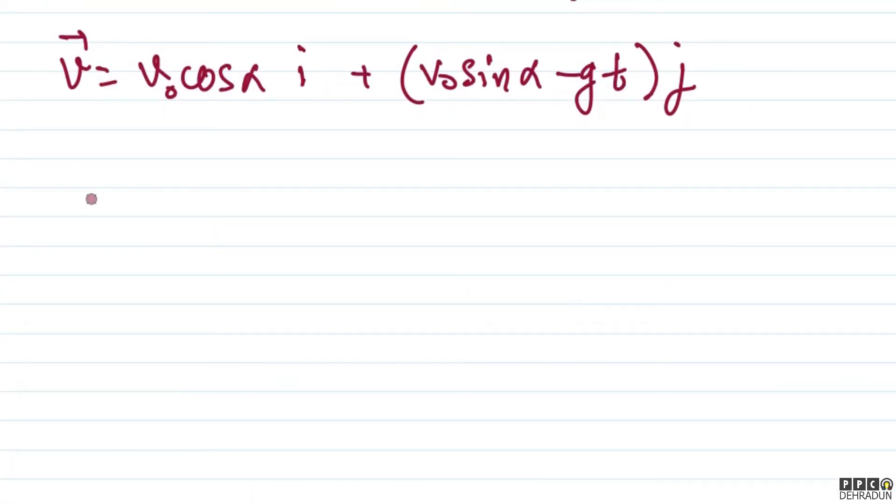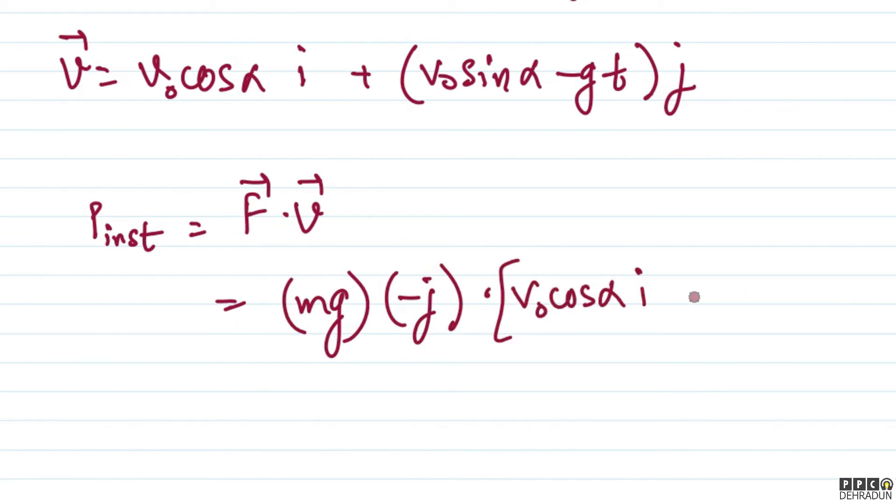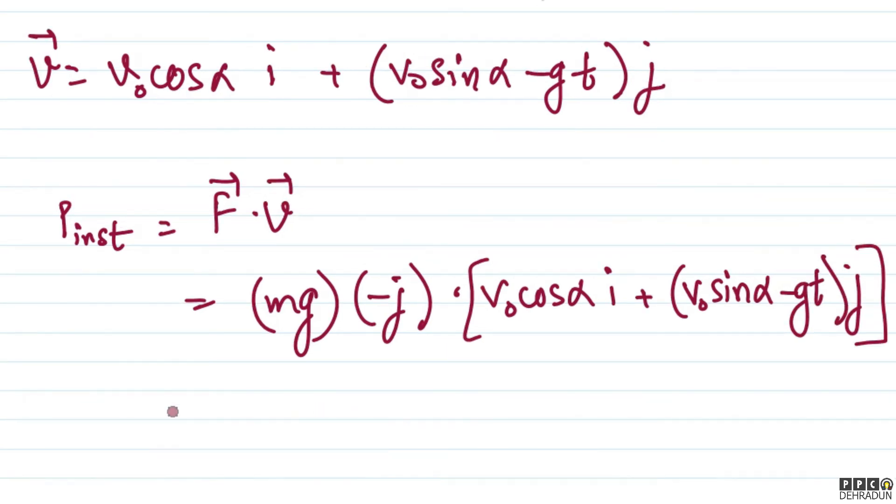Now let's find the instantaneous power. We can write instantaneous power equals f vector dot v vector. The force vector is mg times minus j-cap. Taking the dot product with v-naught cos alpha i-cap plus v-naught sin alpha minus gt j-cap. If we take the dot product, this becomes minus mg multiplied by v-naught sin alpha minus gt.